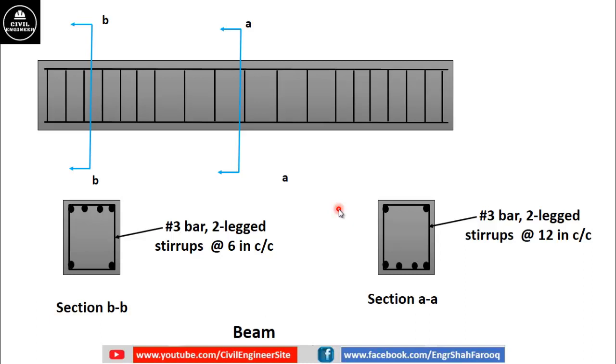The spacing between stirrups or rings at supports is less compared to spacing between stirrups or rings at midspan. Like you can see in this example, the spacing between stirrups or rings at section b-b is...